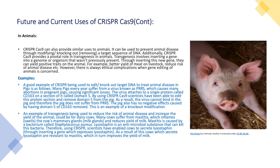An example of transgenesis used to reduce the risk of animal disease and increase yield is in dairy cows. Many cows suffer from mastitis, which inflames the mammary glands — the milk glands — and reduces milk yield. Mastitis is caused by a bacterium called Staphylococcus aureus. Lysostatin is an antimicrobial substance that can kill this bacteria. Using CRISPR-Cas9, scientists have enabled cows to secrete Lysostatin by inserting a gene which expresses it, making cows resistant to mastitis and improving milk yield.